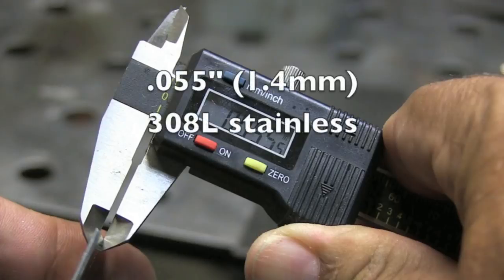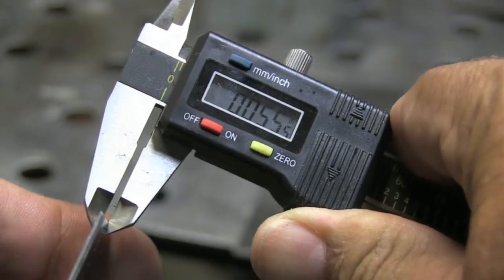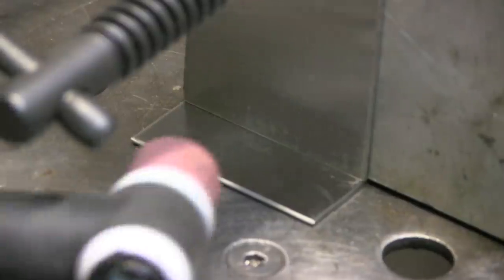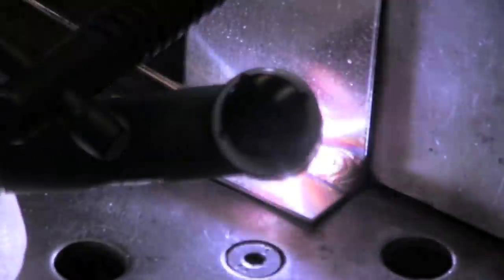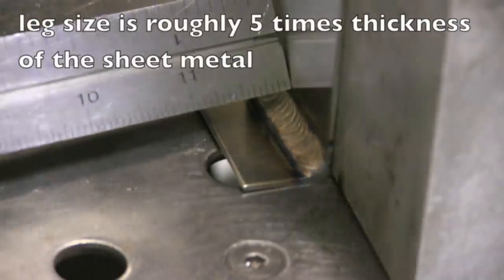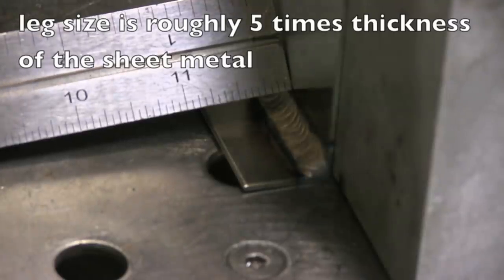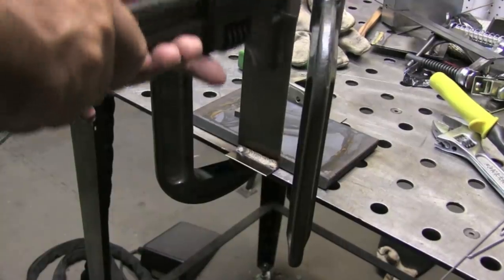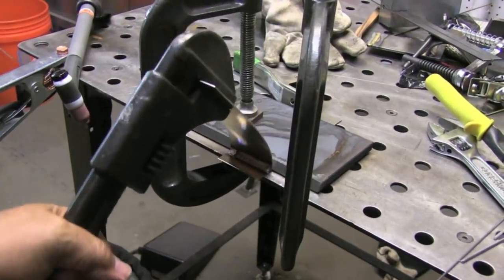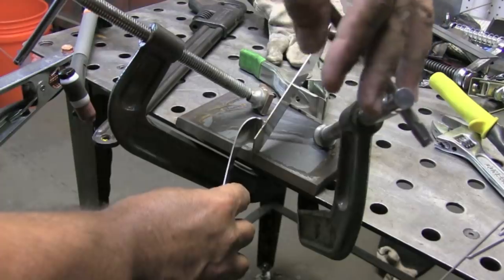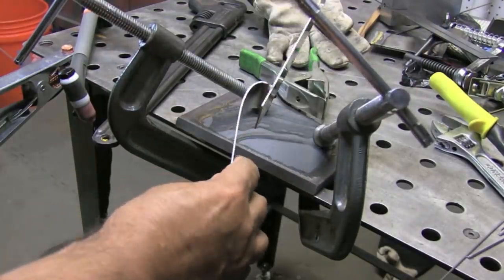If we take a look at some 055, some 1.4 millimeter, 308 stainless sheet metal here, and we set up the same type joint with a very large fillet. I'm using large filler metal with a leg size of roughly five times the thickness of the sheet metal. I put that in the same clamping arrangement here. It has no trouble, even on a one-sided joint there. It has no trouble holding back and bending and not failing.